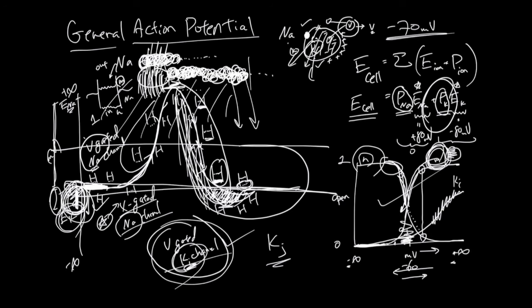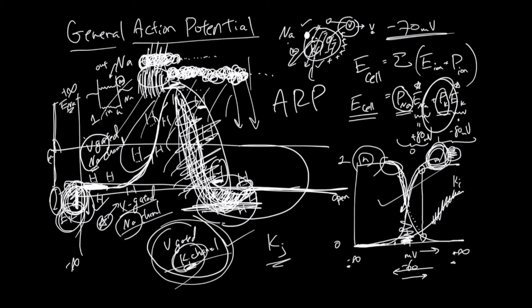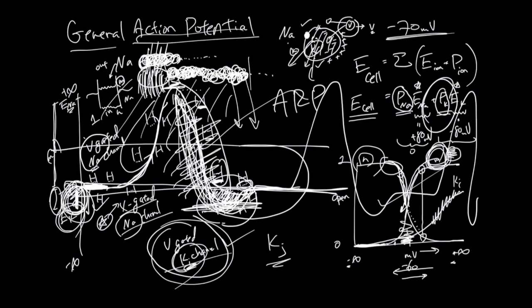Until H opens back up, Na will have no influence. This is called the absolute refractory period, where even if you stimulate the cell here, the Na gates are useless because of H's slow opening. H has nullified Na's permeability. If you stimulate this cell during any of this phase, H is closed, and the cell is not going to be able to generate another action potential. You have to wait for H to completely open up again, and then you can generate another one and so forth. That's the key.